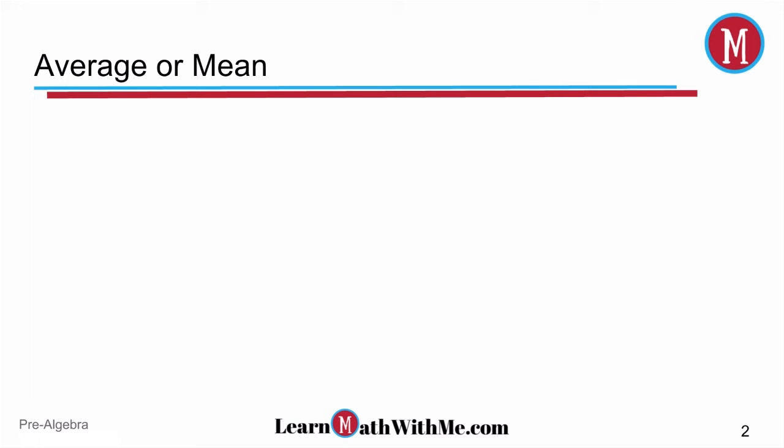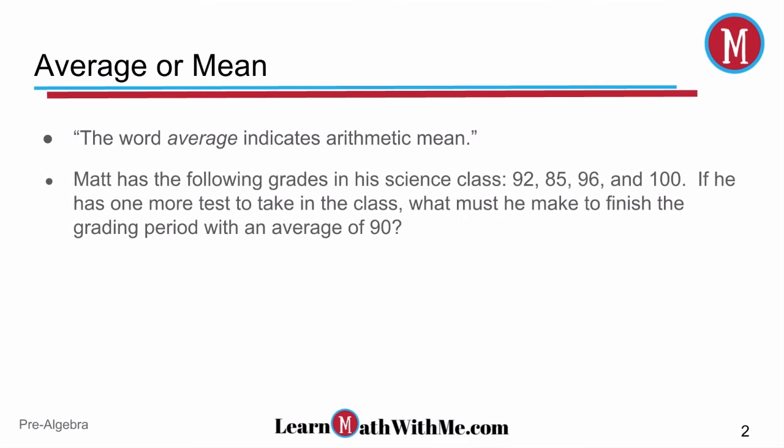First of all, for average or the mean, you'll find at the top of the instructions of the Math ACT section the sentence that says, 'the word average indicates arithmetic mean.' So if you see average or mean in the problem, it's meaning the same thing for the purposes of this test. Let's look at our first example.